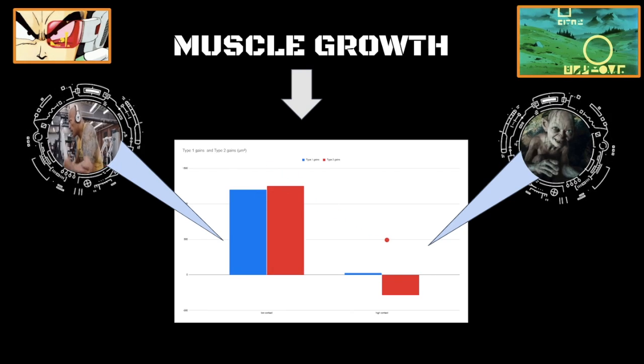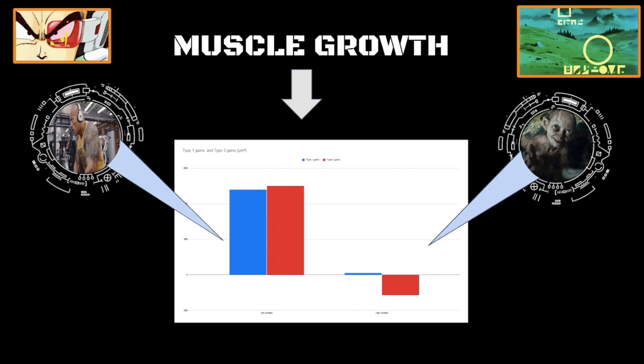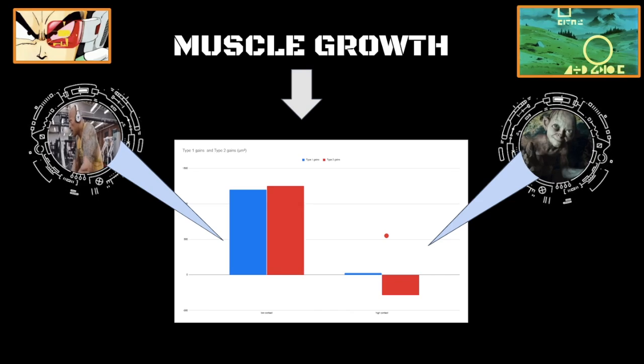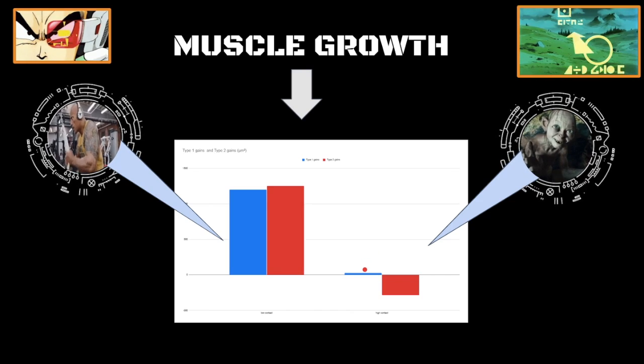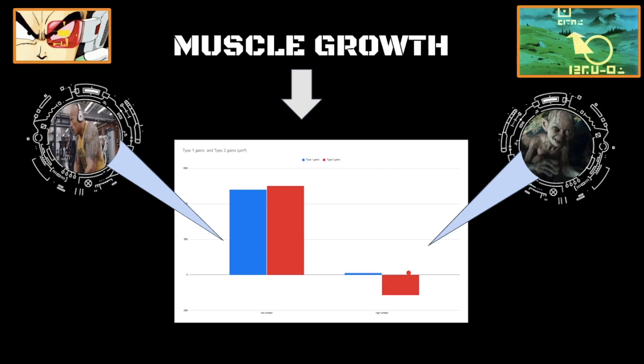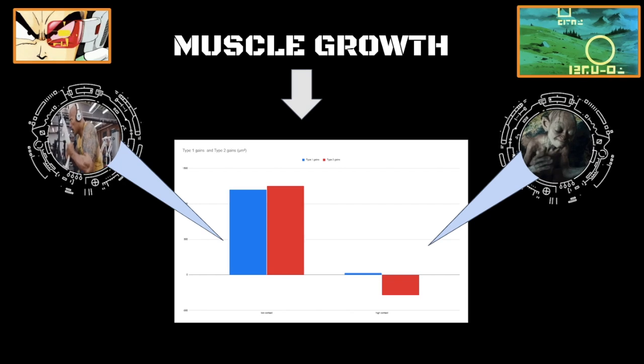Look at the difference in muscle growth from the group that kept cortisol low. As you can see, roughly a 20% increase in gains. And the group that kept cortisol high, a tiny amount of gains in type 1 muscle fibers and type 2 muscle fibers actually regressed. So they actually lost type 2, which are fast twitch muscle fibers.